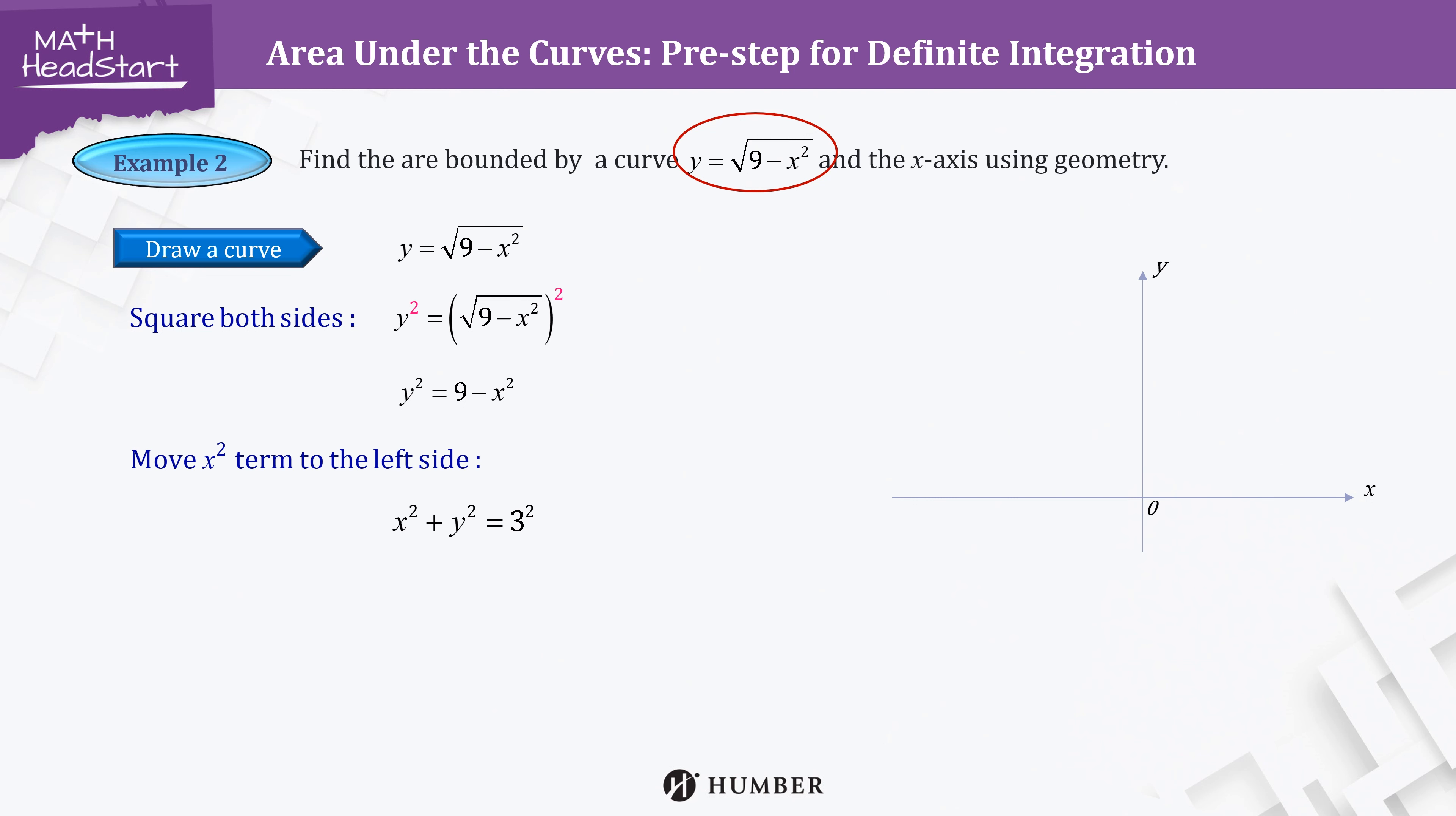After rearranging the terms, we get a circle with a radius 3. This circle equation can be solved for y and we get two functions. For our case, we are interested in the plus function, which is the upper semicircle. Therefore, our target region is as shown.